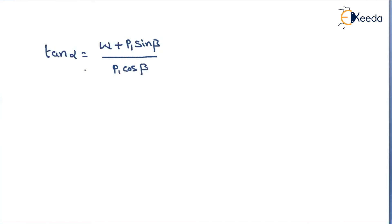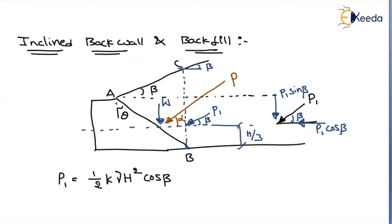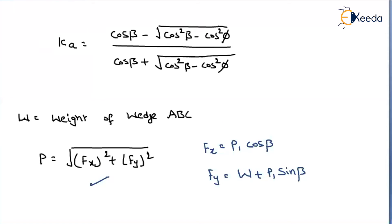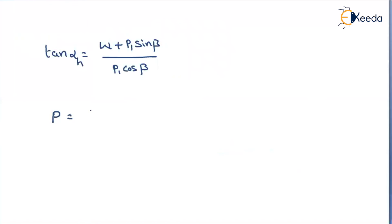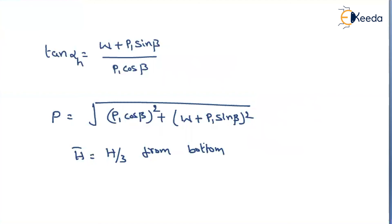Alpha is the angle with respect to the horizontal — please remember this point. The resultant earth pressure is: P = √((P1·cos β)² + (W + P1·sin β)²). It will act at a height of h/3 from the bottom. This is what applies when there is an inclined back wall and also an inclined backfill. Hope you understood — thank you.